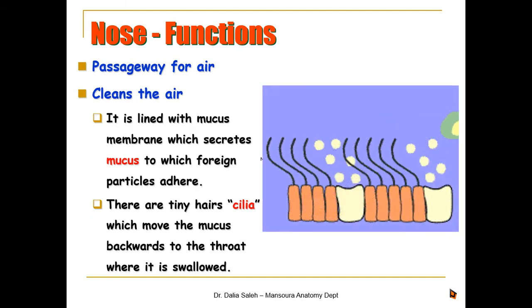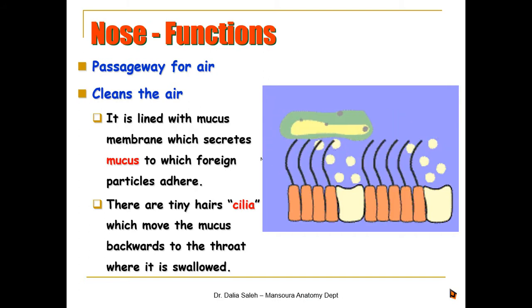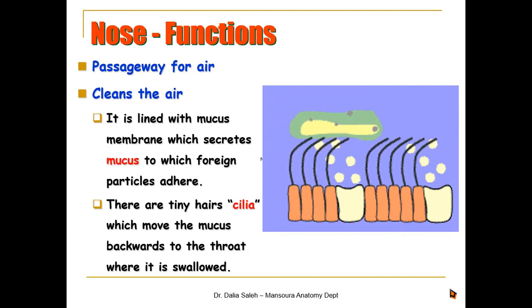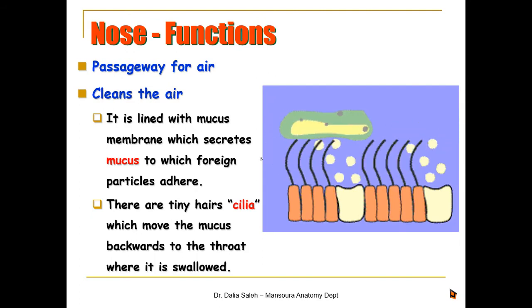The mucous membrane contains tiny hairs called cilia, which move the mucus backwards to the throat where it is swallowed. Some of these tiny hairs are large enough to form visible hairs that trap dust and large particles from the air.